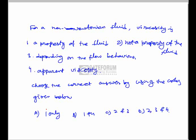For a non-Newtonian fluid, the statements are: (1) viscosity is a property of the fluid; (2) viscosity is not a property of the fluid; (3) it depends on the flow behavior; (4) apparent viscosity. The code-based options are: (i) 1 only; (ii) 1 and 4; (iii) 2 and 3; (iv) 2, 3 and 4.